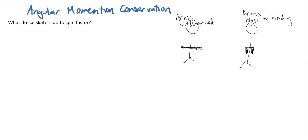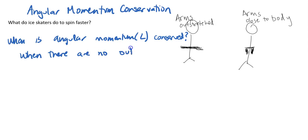think about when it is conserved. When is angular momentum—and again, the symbol for angular momentum is L—conserved? This is conserved when there are no outside or net torques acting on a system.